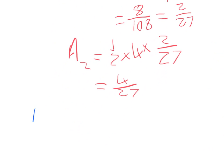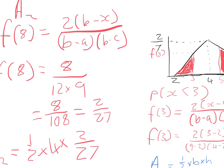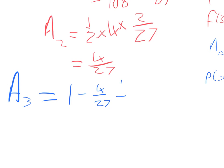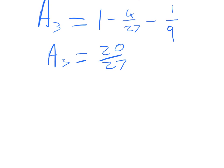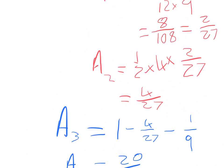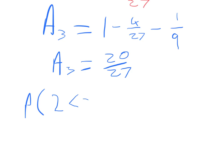So the final area — Area 3 — equals 1 minus 4/27 minus 1/9. Since 1/9 = 3/27, the answer is 1 minus 4/27 minus 3/27 = 20/27. Therefore, P(2 < X < 8) = 20/27. That's a few examples of how to work out a triangular distribution — hopefully that's helpful and you'll see how to do these for any situation you might encounter.